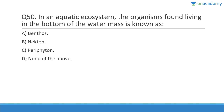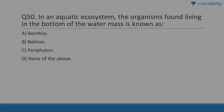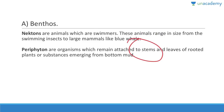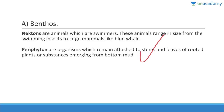Question fifty: In an aquatic ecosystem, the organism found living at the bottom of a water mass is known as benthos. Nektons are swimmers and range in size from insects to large mammals like blue whales. Periphyton are organisms that remain attached to stems and leaves of rooted plants or substances emerging from the bottom mud. These are very important concepts. We will continue in the next lesson.